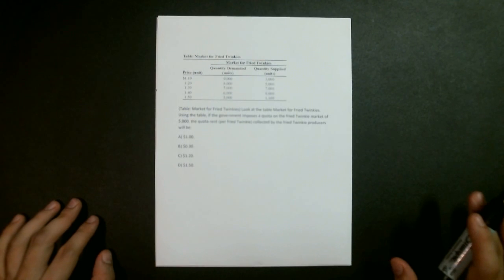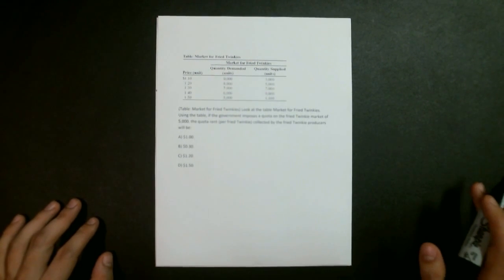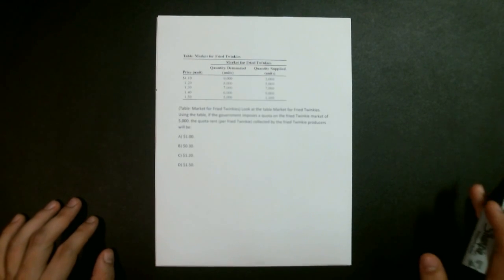A: $1.00, B: $0.30, C: $1.20, or D: $1.50.